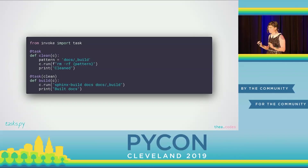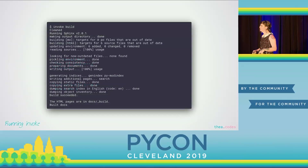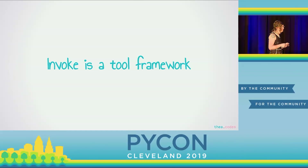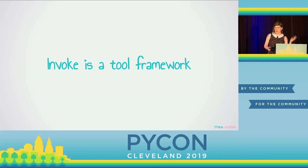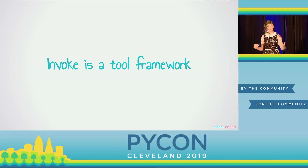Tox has this thing about environments — that's its high-level concept. Nox has this thing about sessions — that's its high-level concept. But with Invoke, you have tasks, which is a much more general thing — task-based workflows. These two simple tasks basically clean the docs build, deleting any old HTML, and then build it. They're two separate tasks that have dependencies, so when you run them it actually cleans the build output first and then runs the build. What I find myself doing is using Tox and Nox for the Python testing aspect of my projects, and then using Invoke to handle the maintenance minutia.